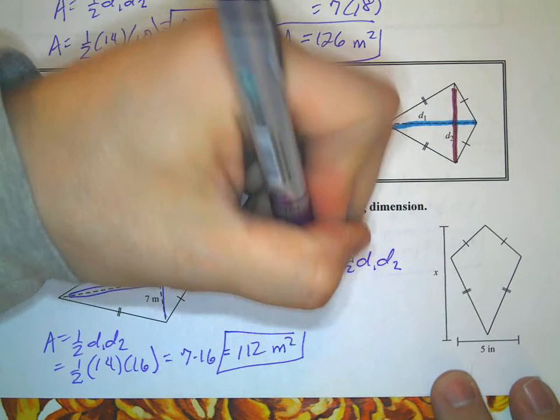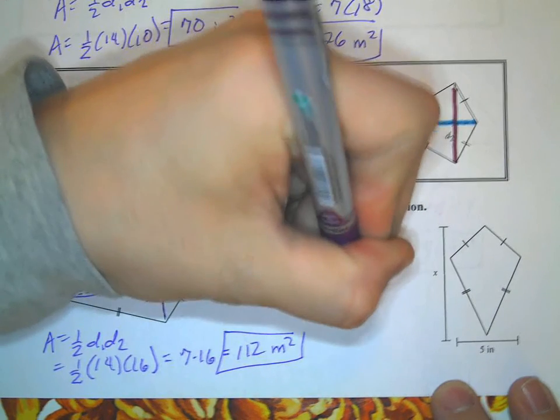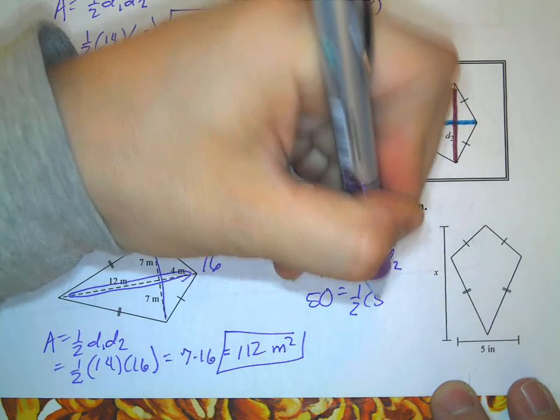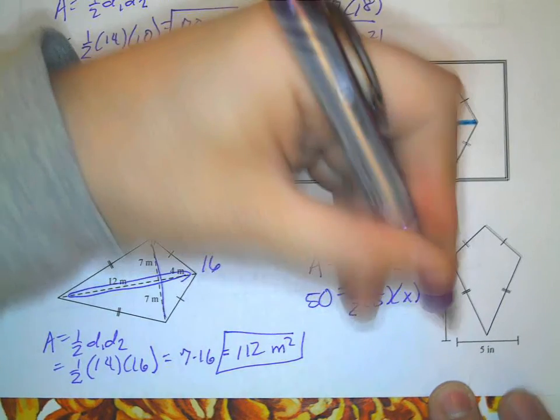So we have 50 equals 1/2 times, well, one of these is 5. The other one is x.